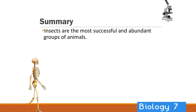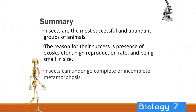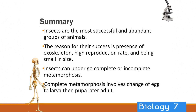In summary: insects are really, really successful and they're everywhere. One of the big reasons for their success is the presence of that exoskeleton, they're really fast at reproducing, and being so small. There are two different types of metamorphosis — complete and incomplete. The complete involves a change from egg to larva and then pupa before the adult. The incomplete involves the egg and a nymph before it turns into an adult.